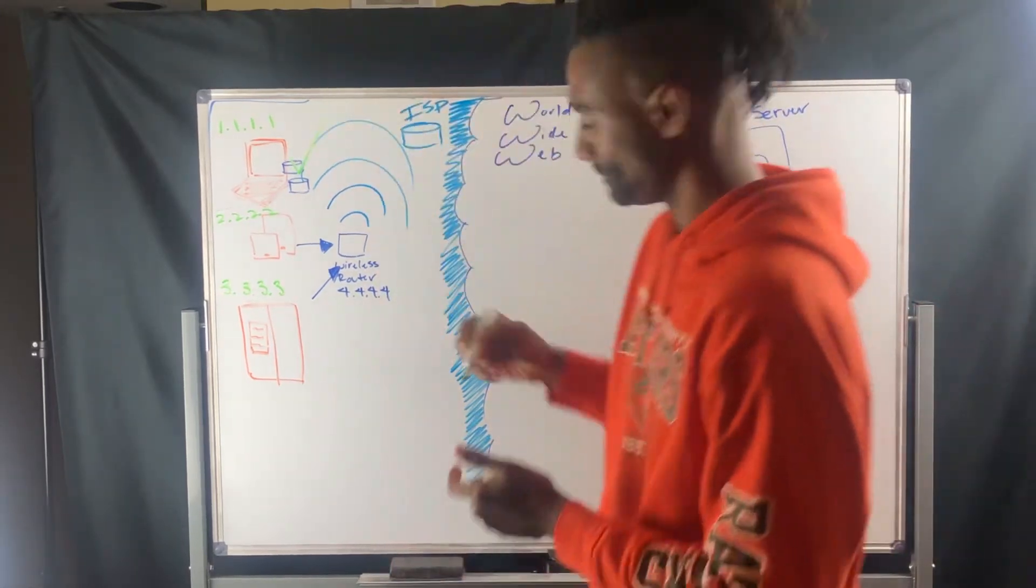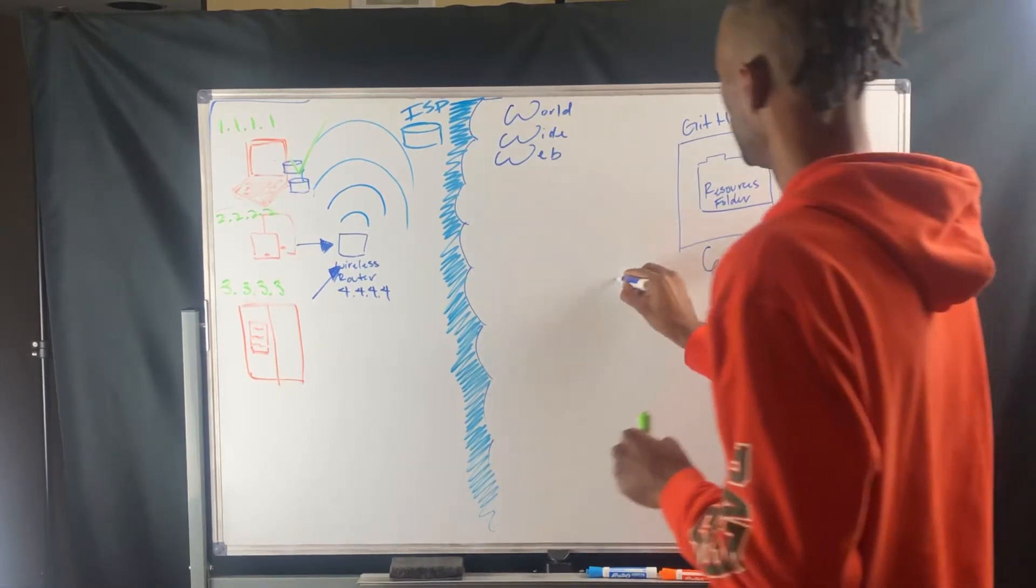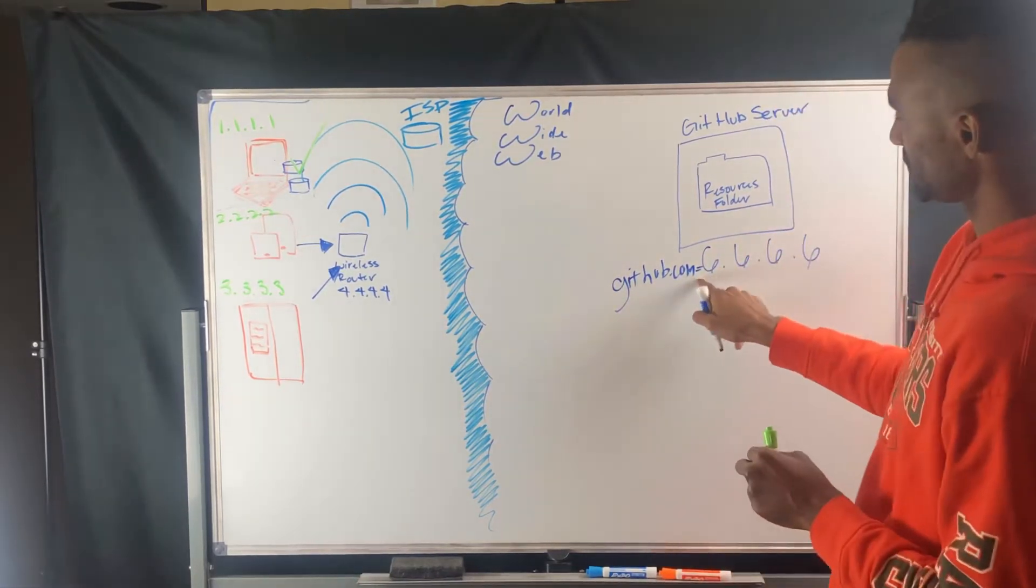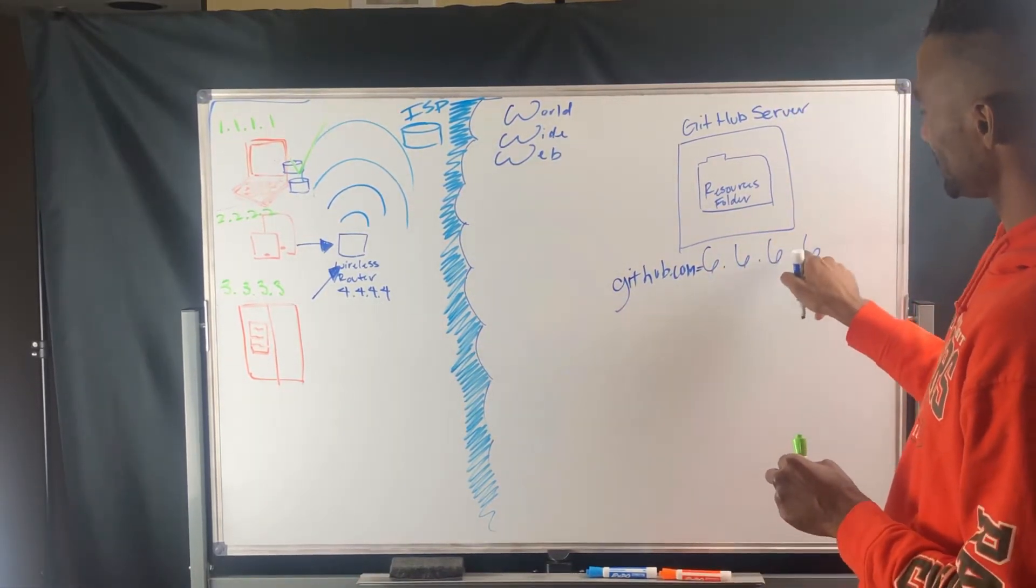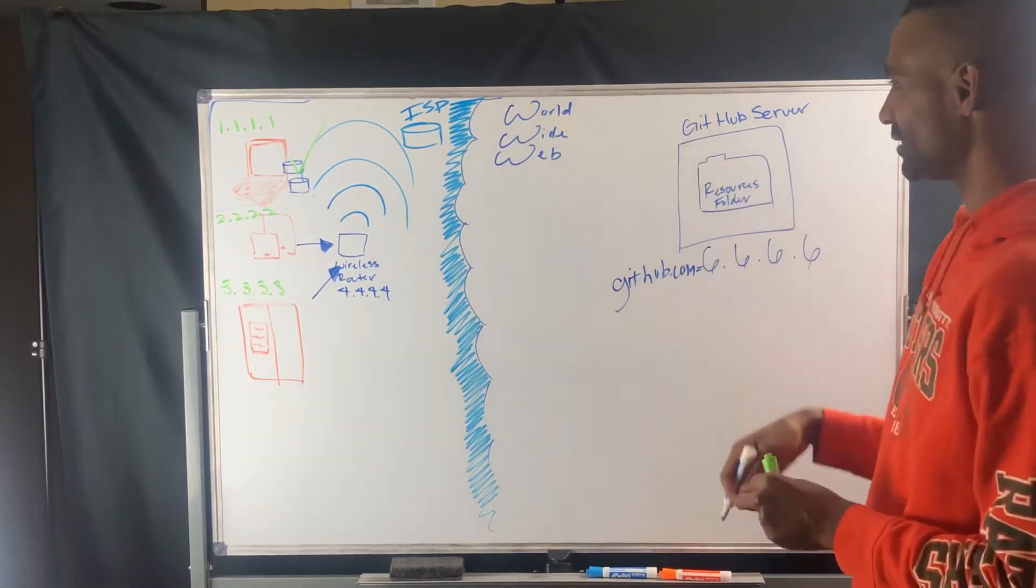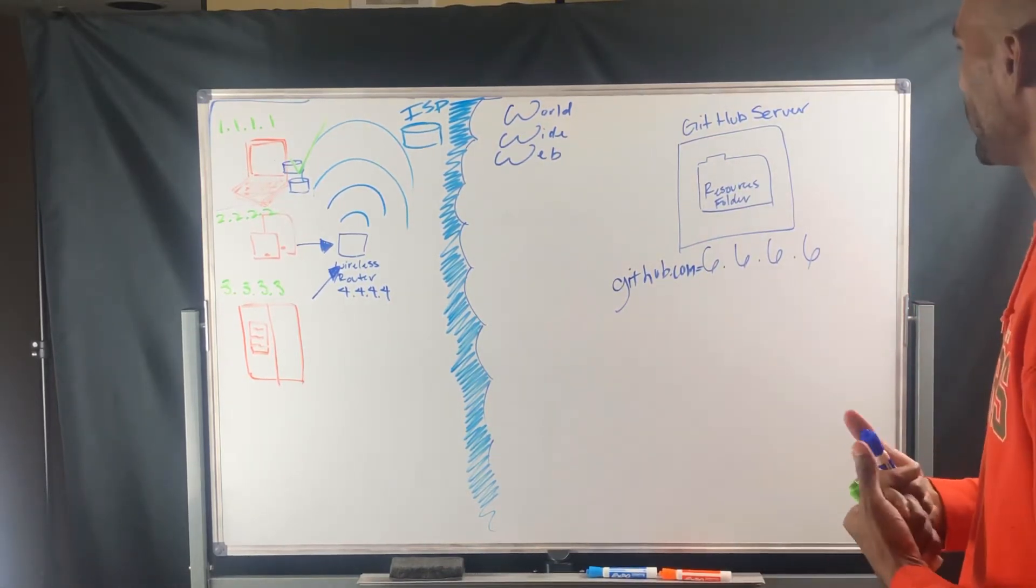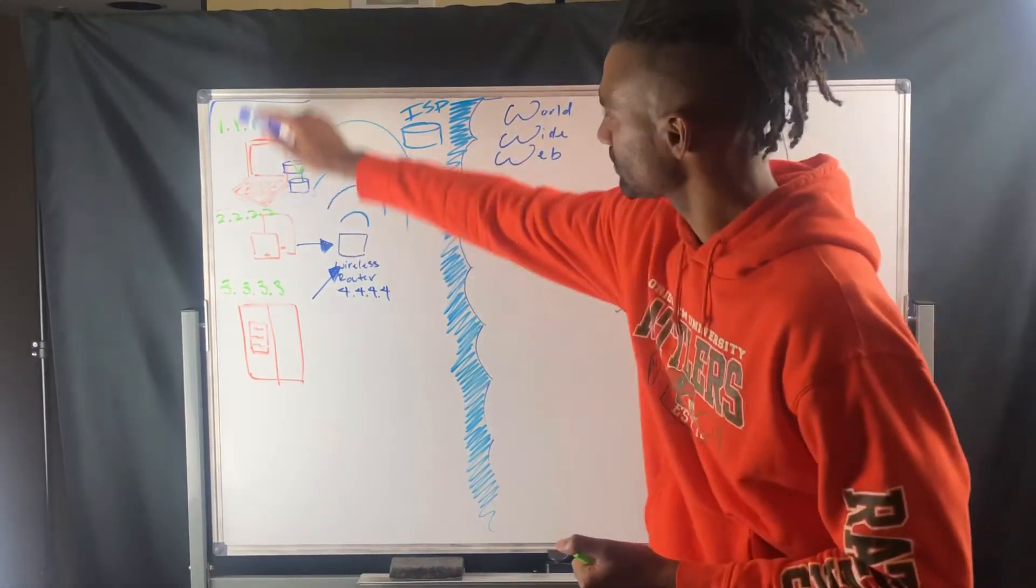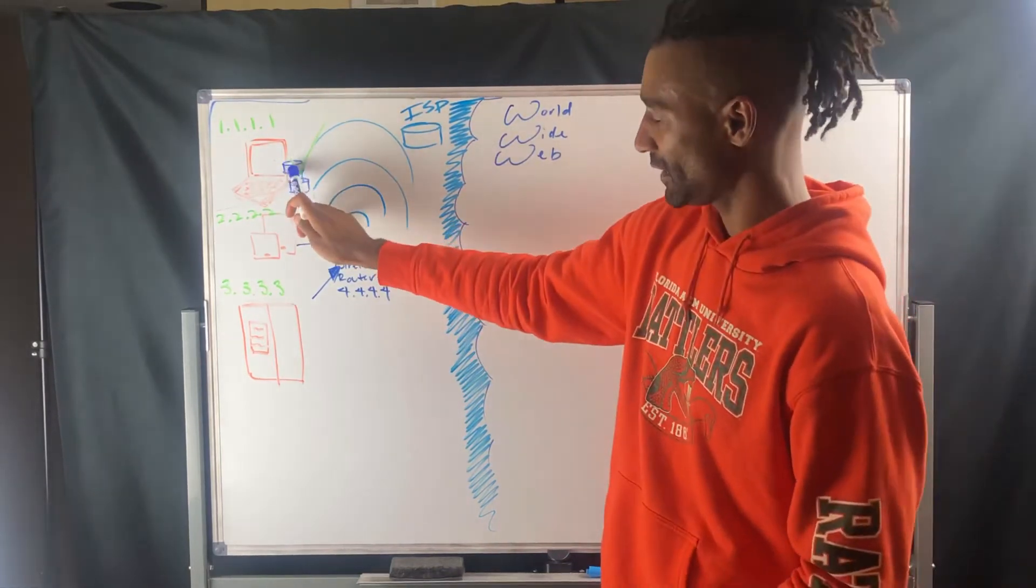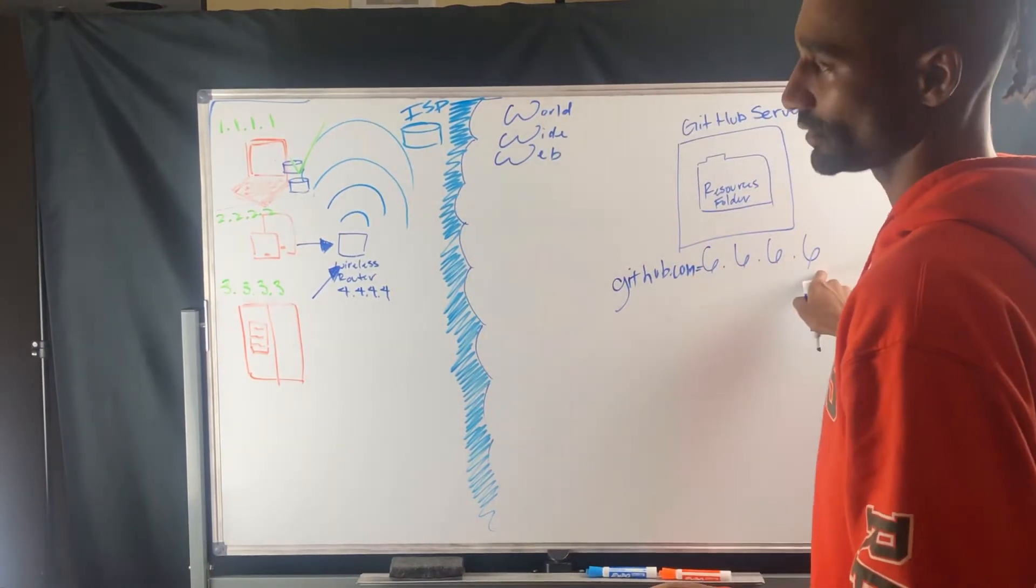So we got that hit, and we know that github.com is equal to an IP address that equals 6.6.6.6. So regardless, we're going to go to github.com. We have the entry saved in our cache that is on the web browser. And so now we just know exactly where it's located on the web.